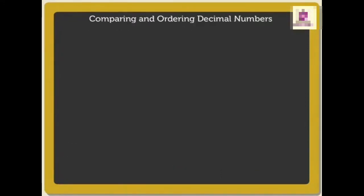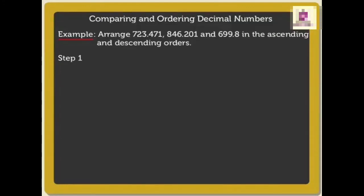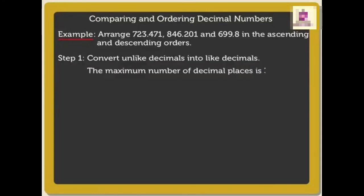Now, how to compare and order decimal numbers. First of all, we have given three decimal numbers and we have to arrange them in ascending and descending order. First step will be convert unlike decimals into like decimals. Find out the maximum number of decimal places, which is 3 here. So, write all the decimals with three decimal places.